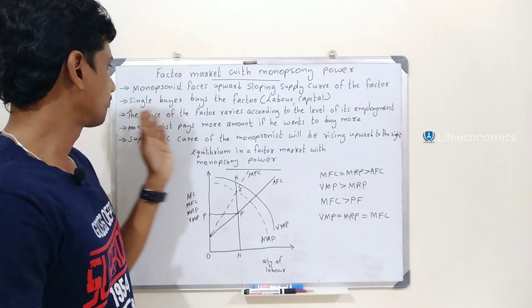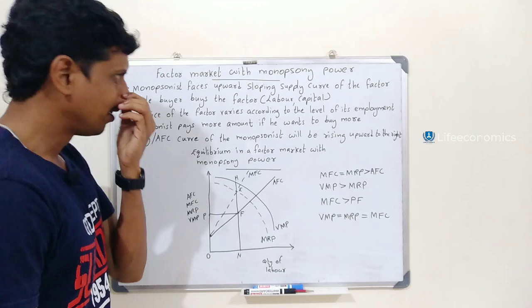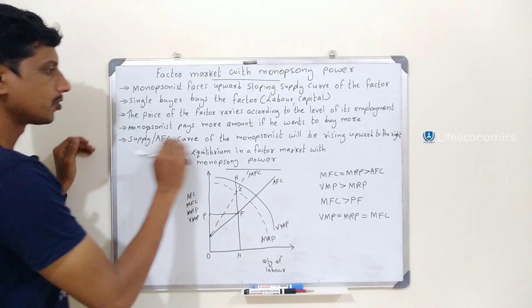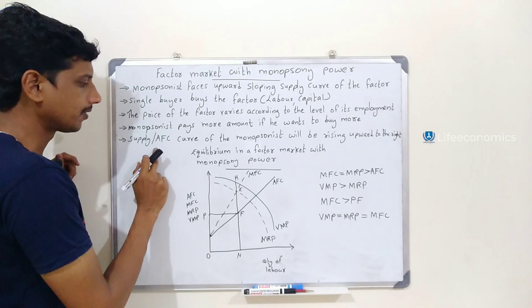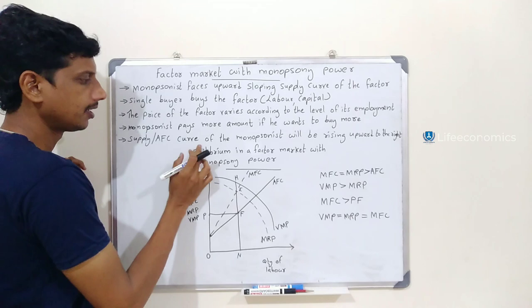If employment increases, its price varies accordingly. It depends on the price set by the monopsonist. The monopsonist pays a higher amount if he wants to buy more. Supply is represented as an AFC curve — that is, the Average Factor Cost.